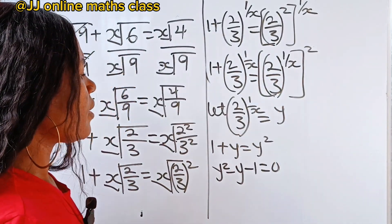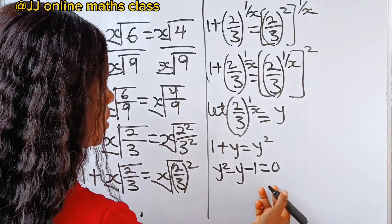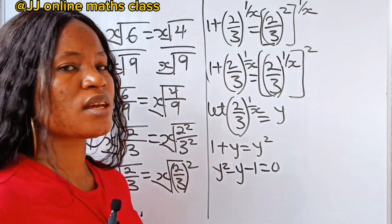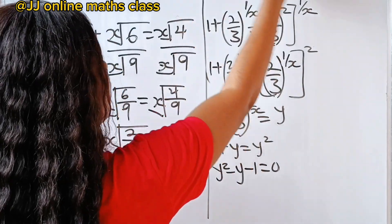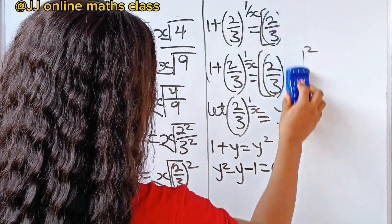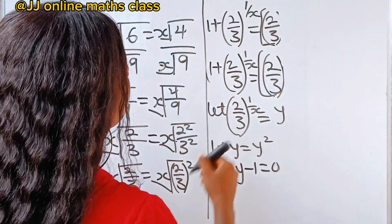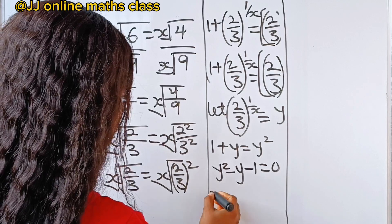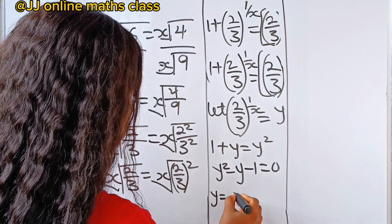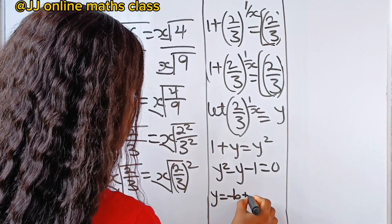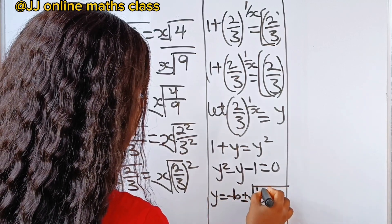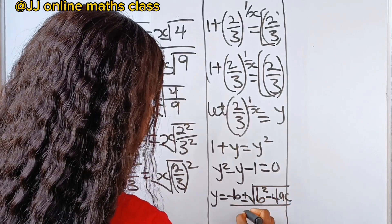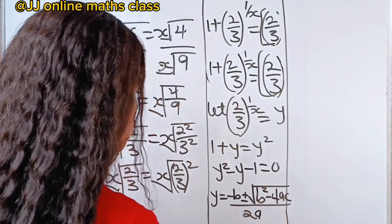Now we have a quadratic equation. So let's use the quadratic formula, which states that y is equal to minus b plus or minus square root of b squared minus 4ac, all over 2a.